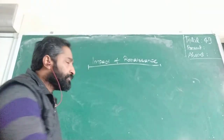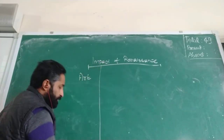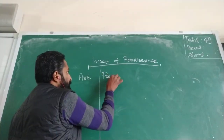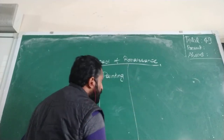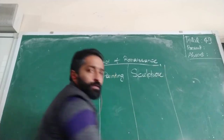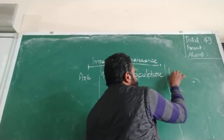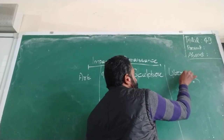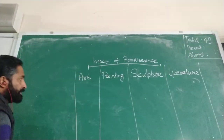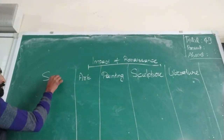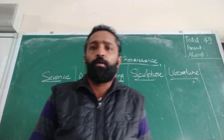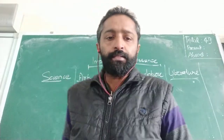There are five impacts of renaissance to be learned. The first one is art, the second is painting, the third is sculpture, the fourth is literature, and the last one is science. These are the topics we will understand in today's class. So let's start with art.